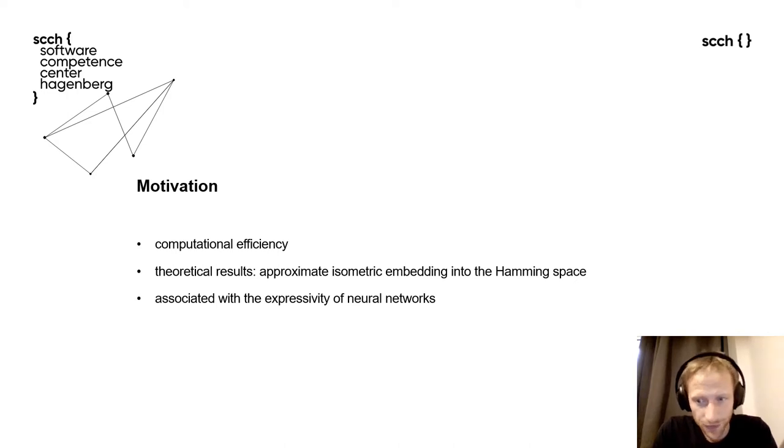There is also more theoretical motivation of our work. It turns out that a ReLU-based neural network, which we define shortly, provides an approximate isometric embedding into the Hamming space. Lastly, there has been a lot of work associating the expressivity of neural networks as a function of its binary activation values, which we describe a little bit more in detail shortly afterwards.